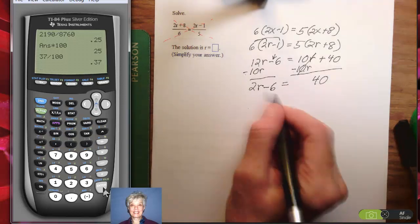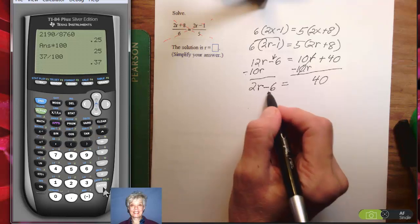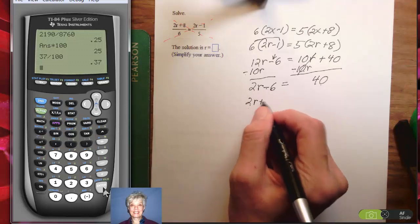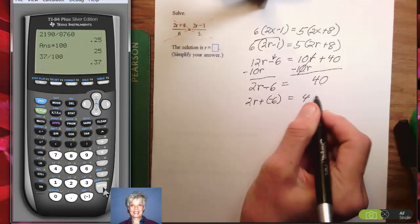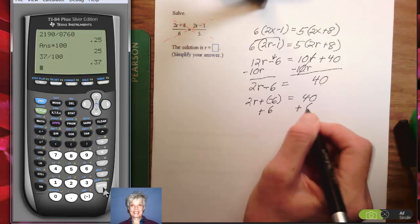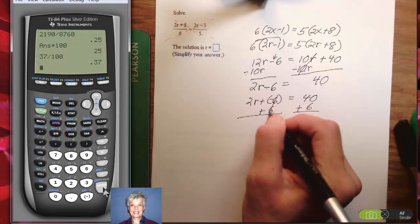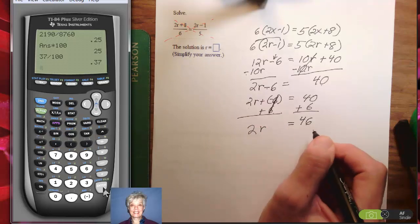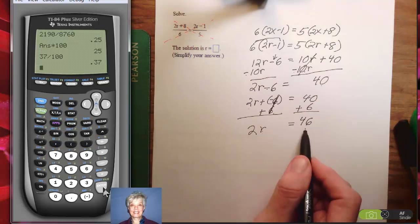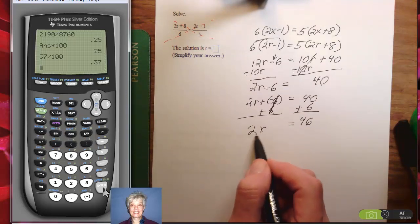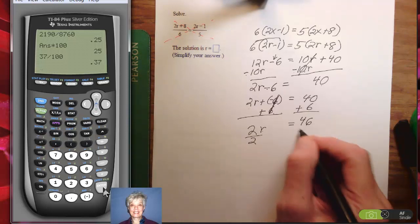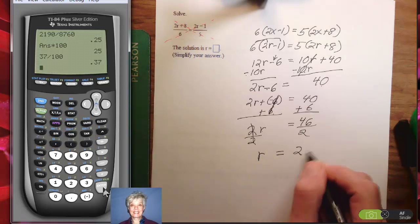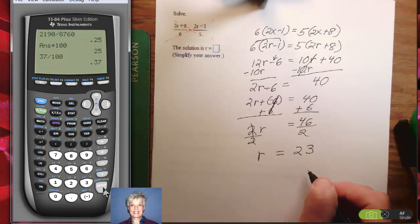Now I have a variable term, a constant term, and a constant term. I need to get this negative 6 over to the 40. Remember, this is 2r plus negative 6 equals 40. So I'm going to add positive 6 to both sides of the equation, because negative 6 plus positive 6 equals 0. And I'll be left with 2r equals 46. Now, I have 2 times r equals 46; to undo the 2 and get r by itself, I divide by 2. 2 over 2 is 1. I'll have 1r equals 23, so r equals 23.